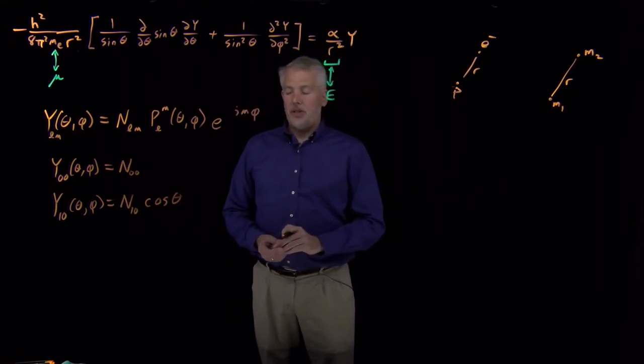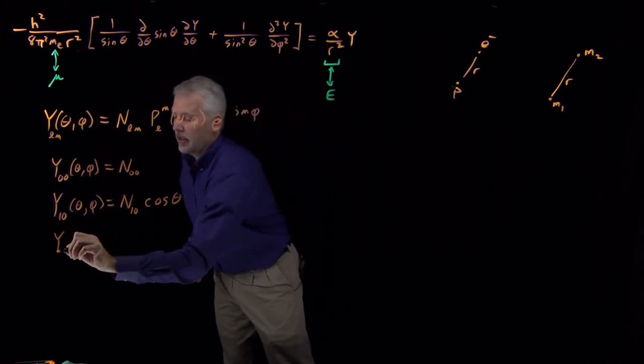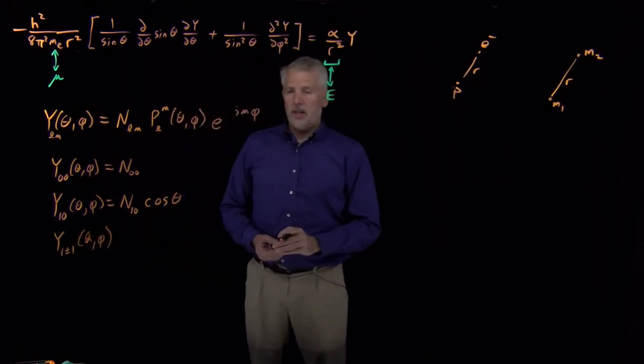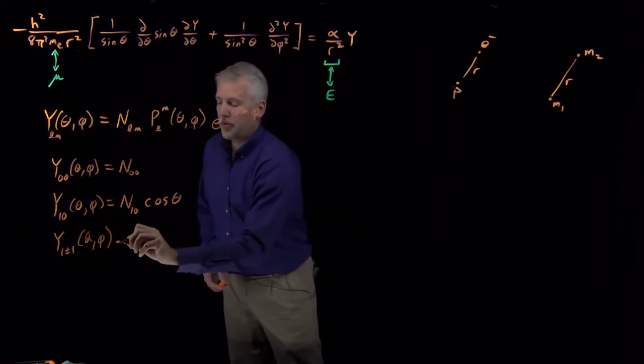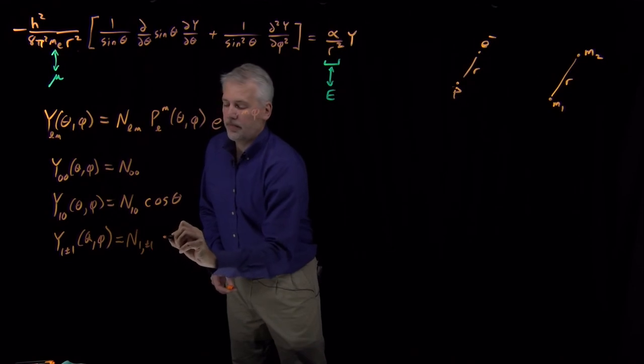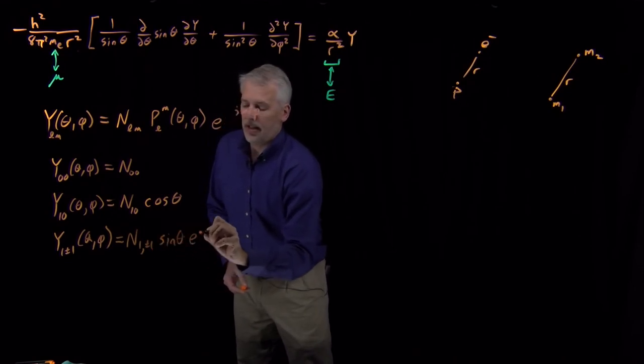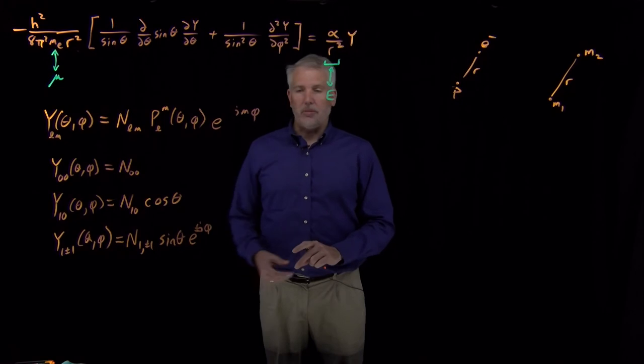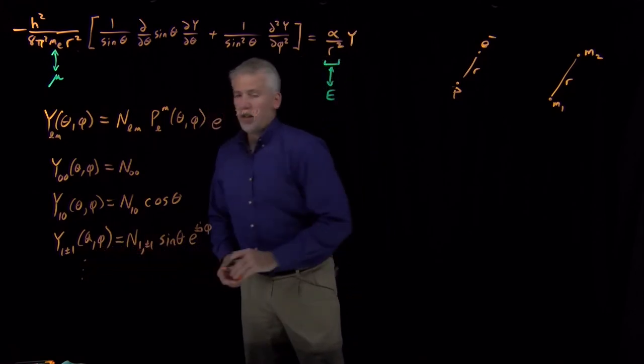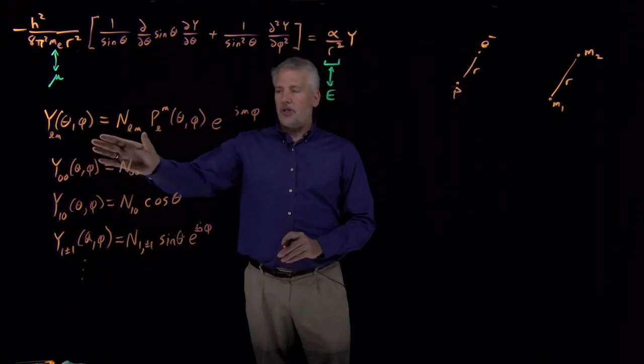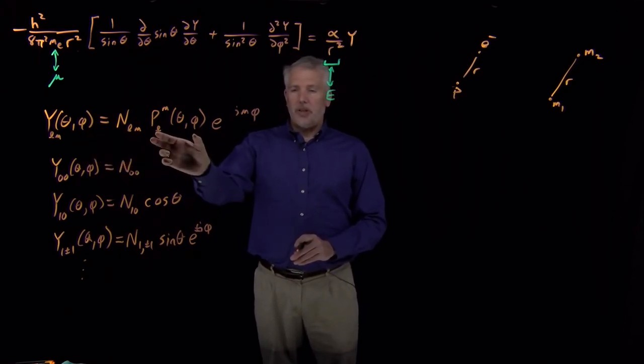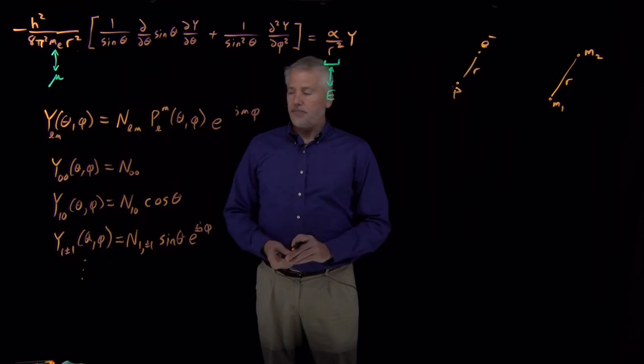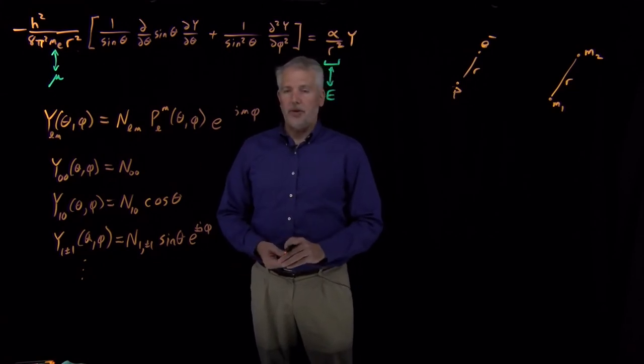And then the 1,1 and the 1, negative 1 wave functions for the rigid rotor looked like a normalization constant multiplied by sine theta and then e to the i phi or e to the minus i phi, depending on whether I have a plus 1 or a minus 1 here. So there's an infinite number of those wave functions, any l and any m that we insert into this equation. We've got a particular polynomial in cosine theta or sine theta, an e to some number of i phi's, and a normalization constant out front. And those are also the solutions for the angular behavior of the hydrogen atom.